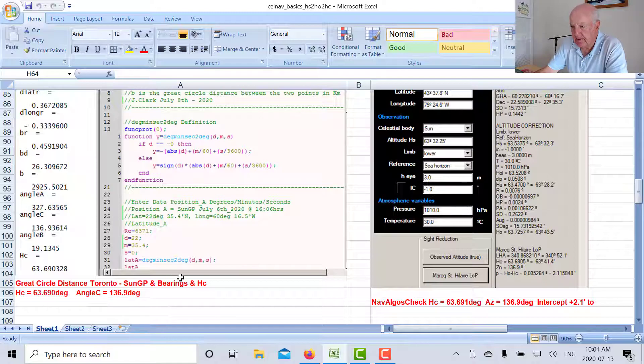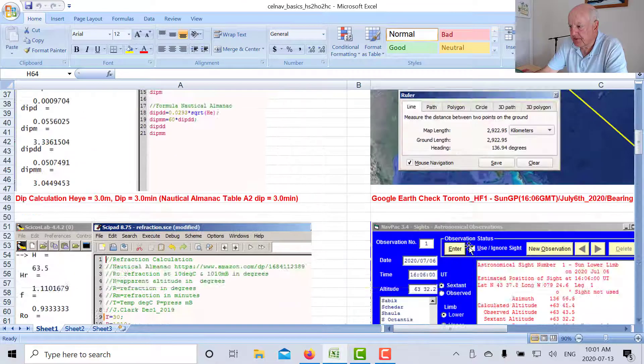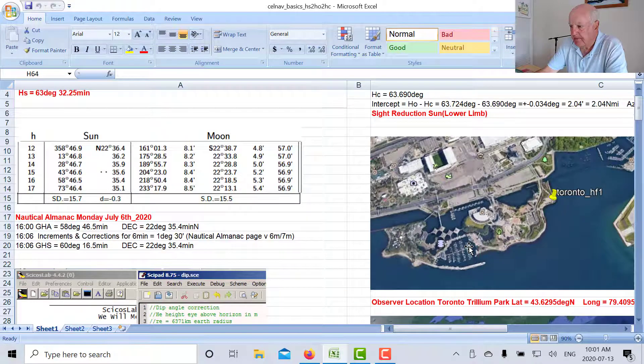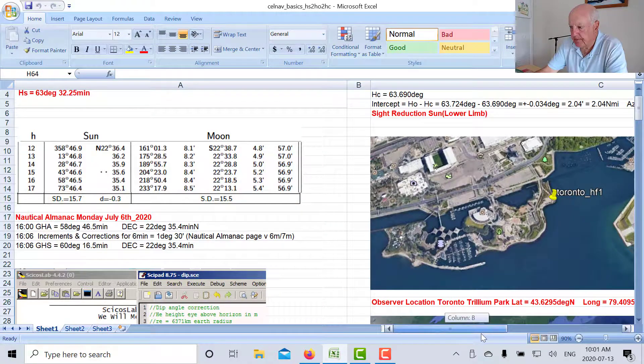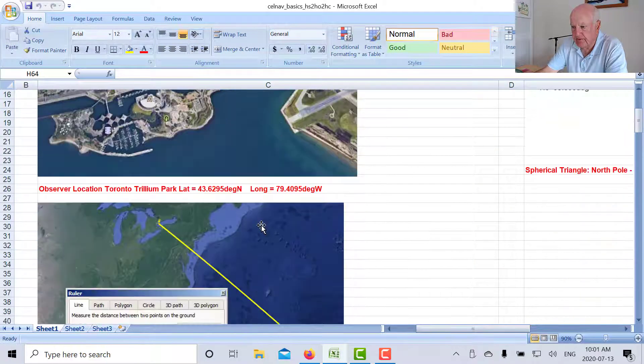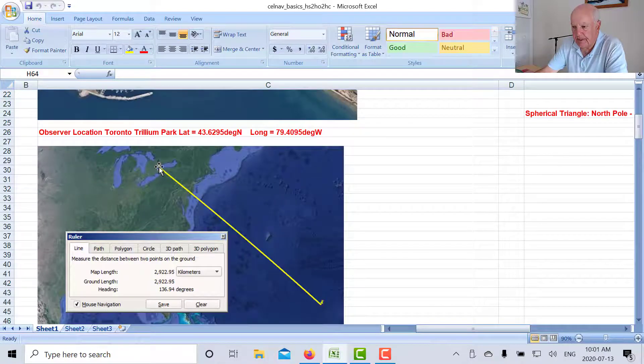And that gives us 63.69 degrees and the bearing or azimuth is 136.9 degrees. Now I also like to check my results a couple of ways.